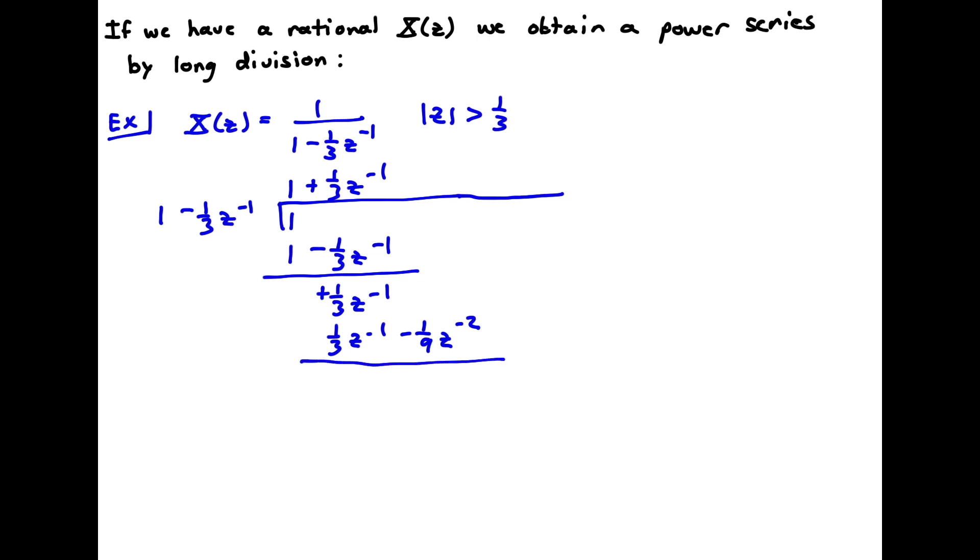I subtract that off, I get a third z inverse minus a third z inverse, that goes to 0. And then 0 minus a ninth z to the minus 2 gets me plus 1 ninth z to the minus 2. So now this is what I have to get here. So what am I going to multiply 1 by to get 1 ninth z to the minus 2? Well, I put a 1 ninth z to the minus 2 up here, and I get 1 ninth z to the minus 2 minus 1 27th z to the minus 3, because that's the multiplication of these two. I subtract off, I'm left with 1 27th z to the minus 3.